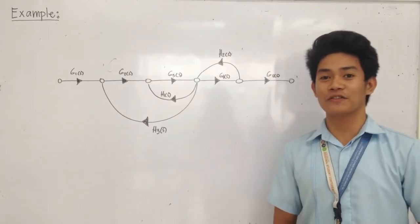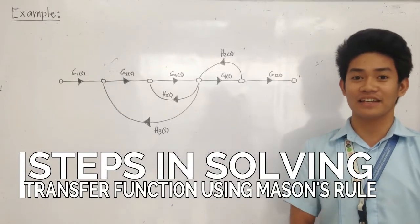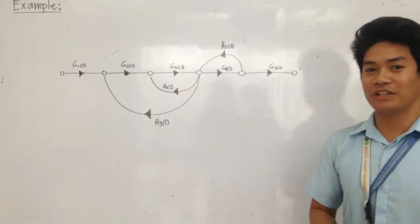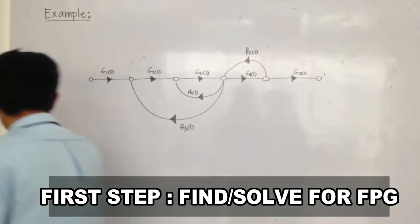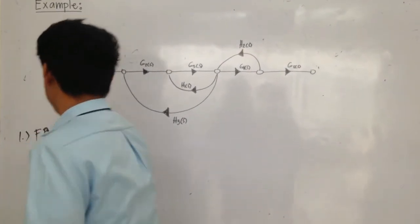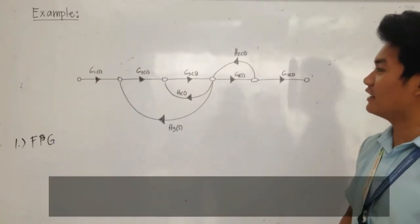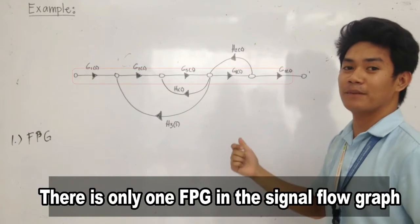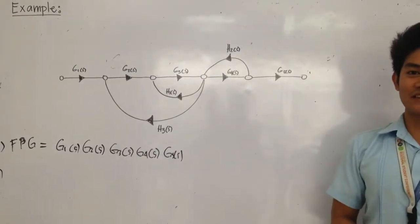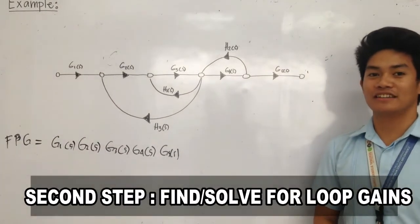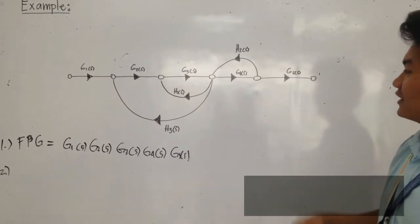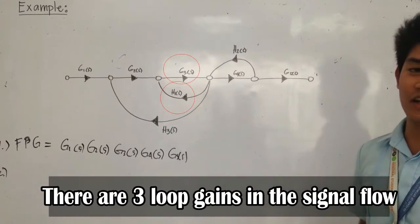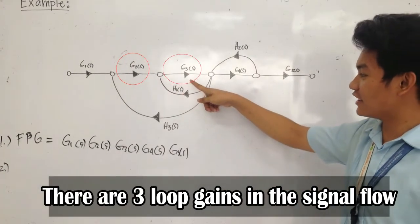Since we already know how to find the transfer function using Mason's formula, we are now going to solve this signal flow graph. First step: we need to find the forward path gains. We can see that the forward path goes through G1, G2, G3, G4, and G5, so there is only one forward path in this signal flow graph. The second step is to find the loop gains. There are three loop gains: the first is G4·H2, the second is H3·H1, and the third is G2·G3·H3.